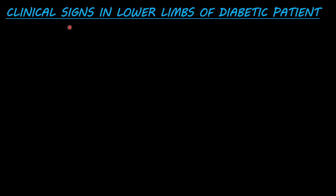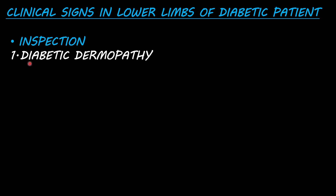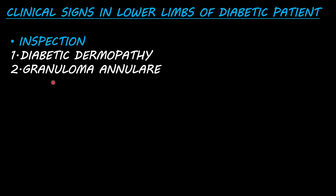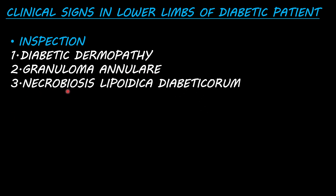Welcome to Medicine Handy Point. Today we will discuss clinical signs in the lower limb of a patient presenting with diabetes. On inspection, we will see a few signs: diabetic dermopathy, granuloma annulare, and necrobiosis lipidica diabeticorum. We will see pictures of these three conditions at the end of this presentation.